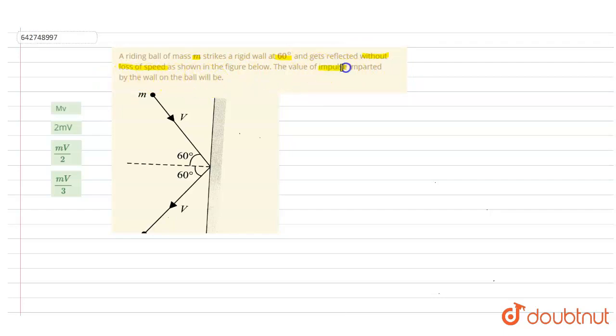you have to calculate the impulse imparted by the wall. So if I write here, the impulse I, that is the magnitude of change in momentum, that will be m*delta v. This is the formula of impulse.